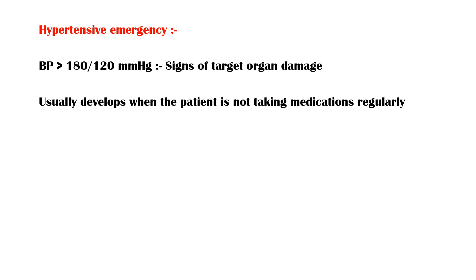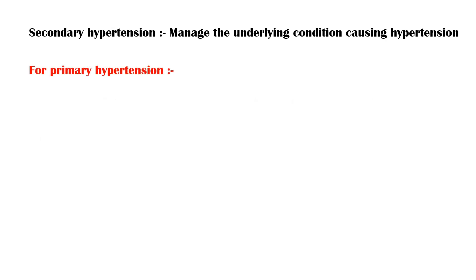Hypertensive emergency requires immediate intervention, otherwise the patient will have serious complications, even death. Treatment of secondary hypertension starts with management of the underlying condition precipitating hypertension. For primary hypertension, treatment starts with lifestyle modifications, including losing weight and reducing salt intake.